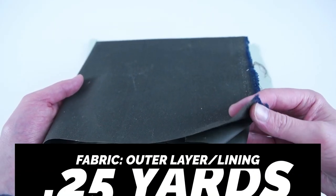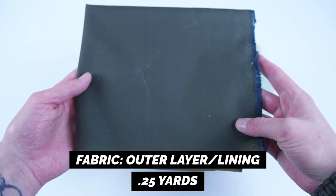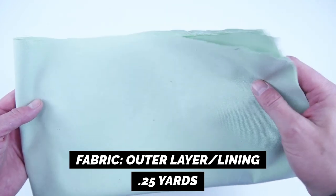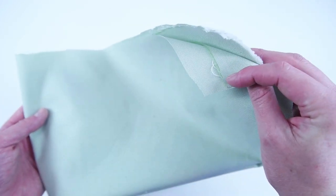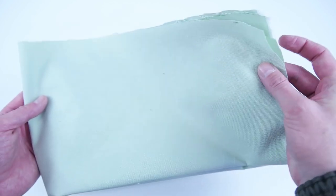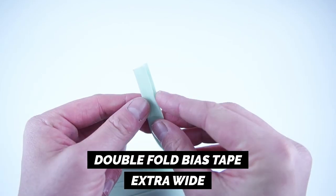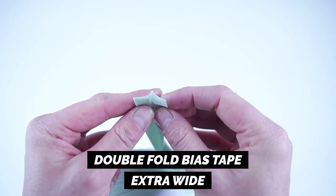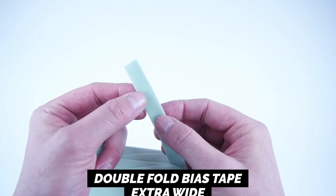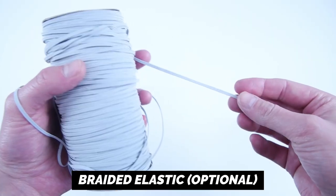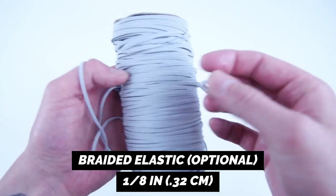Getting started with supplies, you need a quarter yard of tightly woven fabric like cotton and you also need a quarter yard of soft cotton for lining. Extra wide double fold bias tape. You can also make this yourself or just buy it pre-made. Eighth inch braided elastic if you choose to do the elastic back.